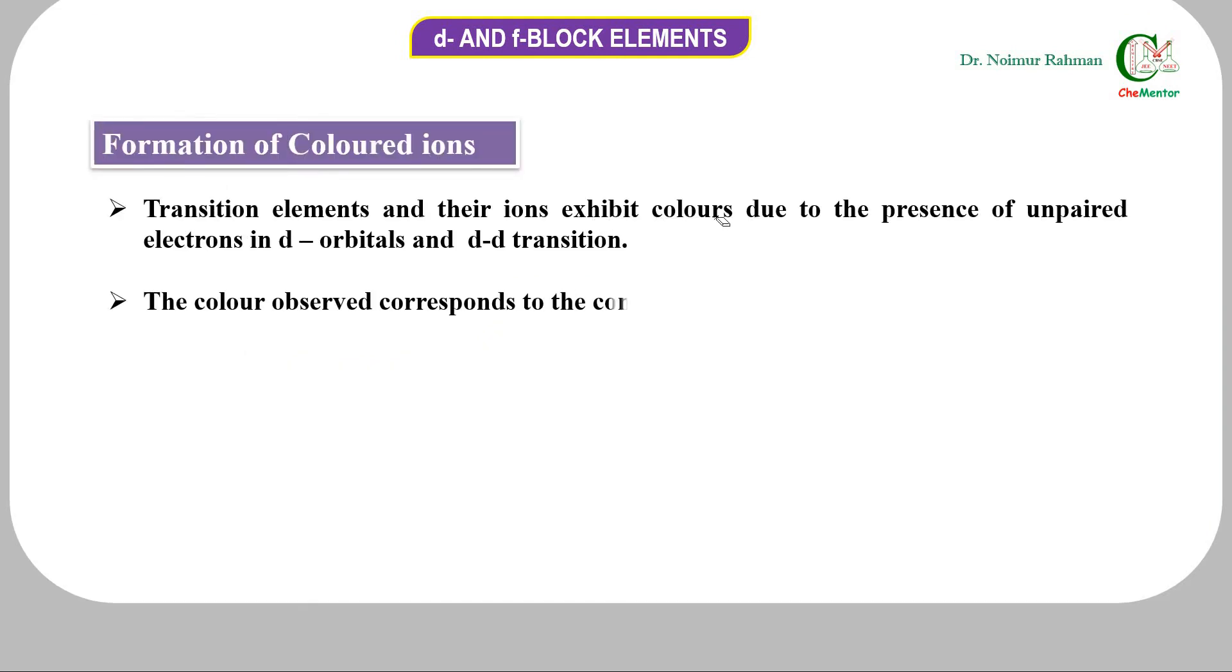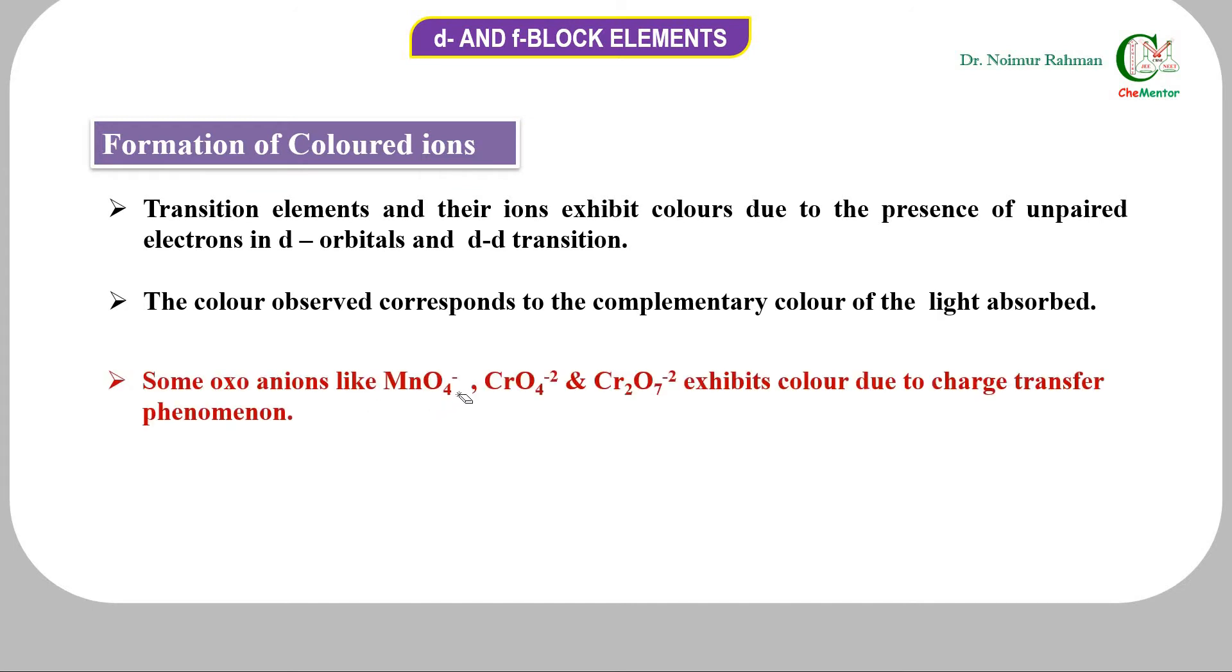The energy emitted, if its frequency matches with that of a color in visible spectrum, we see color. Transition elements and their ions exhibit colors due to the presence of unpaired electrons in d orbitals which causes d-d transition. Some oxo-anions like permanganate ion, chromate ion, and dichromate ion exhibit color due to charge transfer phenomena.